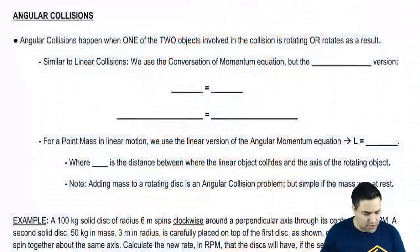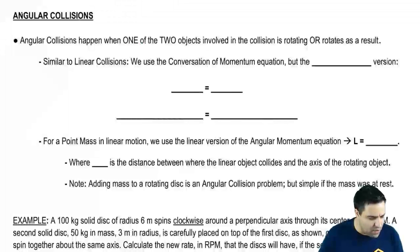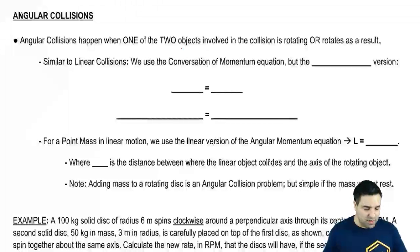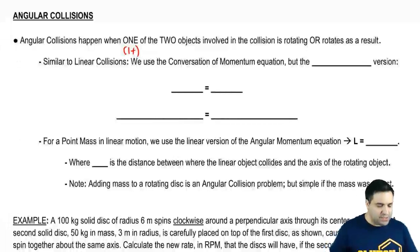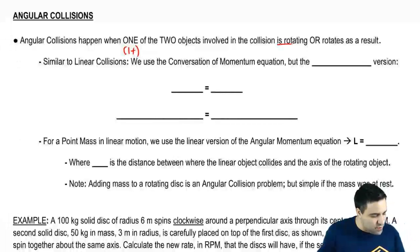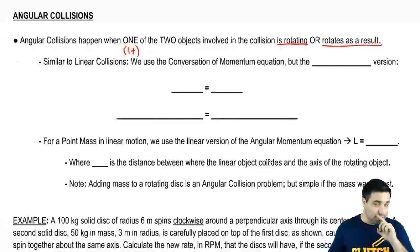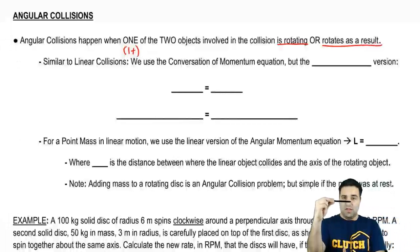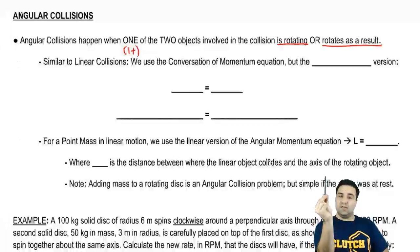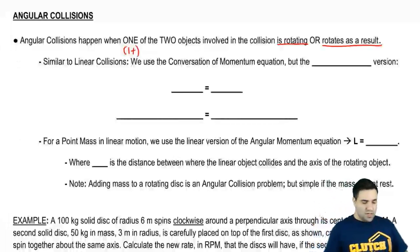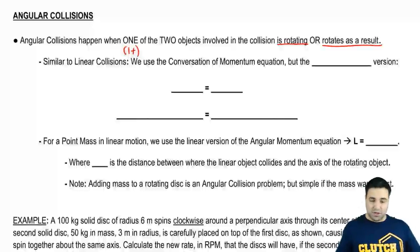Angular collisions happen when one or more of the two objects either is rotating or rotates as a result. In the example I mentioned, the object hits the bar and the bar will rotate as a result, so this is an angular collision.